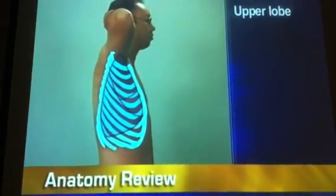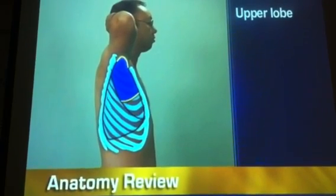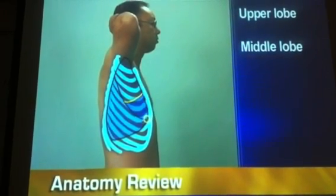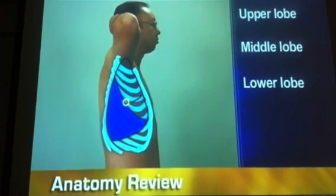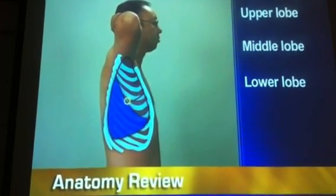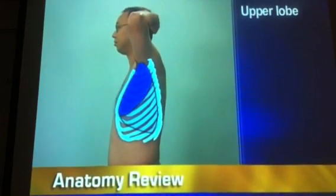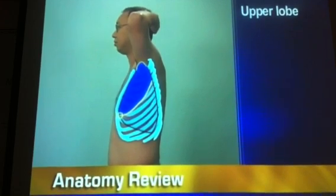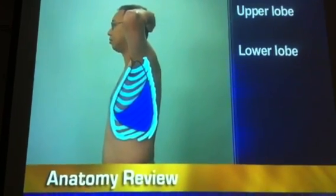On the right lateral thorax, the upper lobe extends from the axilla to the horizontal fissure. The middle lobe goes from that fissure to the sixth rib at the mid-clavicular line, and the lower lobe runs from the fifth rib to the eighth rib in the mid-axillary line. On the left lateral thorax, the upper lobe extends from the axilla to the fifth rib at the mid-axillary line, and the lower lobe continues down to the eighth rib in the mid-axillary line.